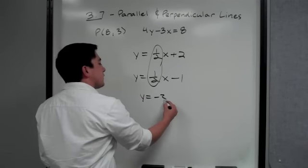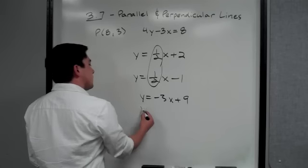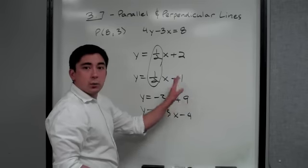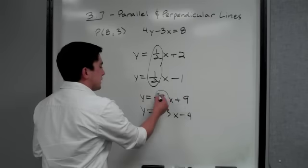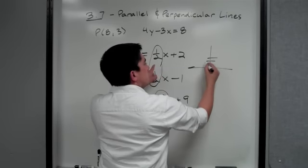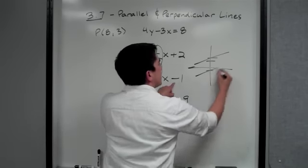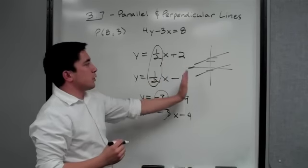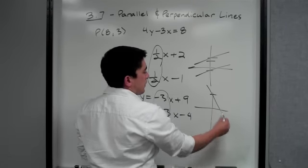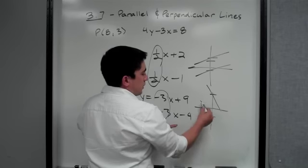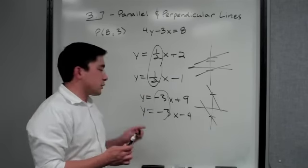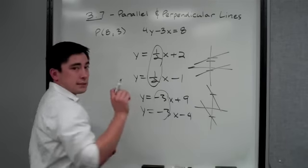Again, y equals negative 3x plus nine and y equals negative 3x minus four — it doesn't matter what the intercept is, these lines are parallel. If you were to draw them, one crosses at nine and the other at negative four, but both have slope negative three, so they are parallel. Parallel means same slope.